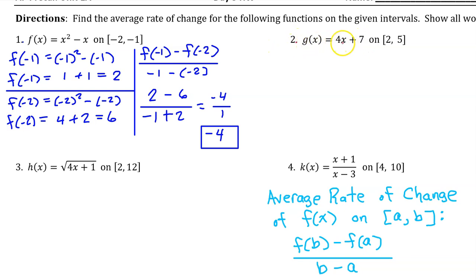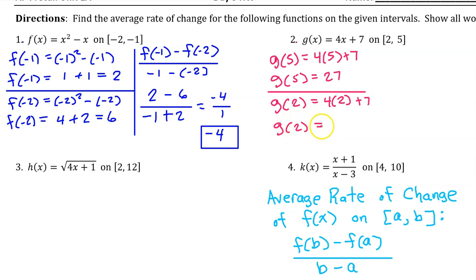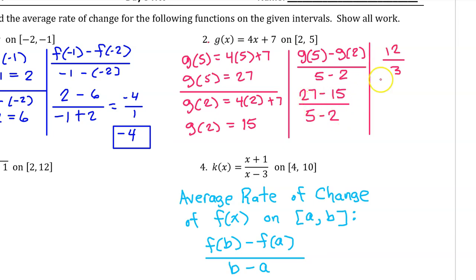To find the average rate of change of g(x) on the interval from 2 to 5, we start by finding g(5). Plugging in 5, we have 4 times 5 plus 7, so g(5) is 20 plus 7, which is 27. Next, g(2) is 4 times 2 plus 7, which is 8 plus 7 = 15. The average rate of change is g(5) minus g(2) over 5 minus 2: that's 27 minus 15 over 3, which simplifies to 12 over 3, which equals 4.